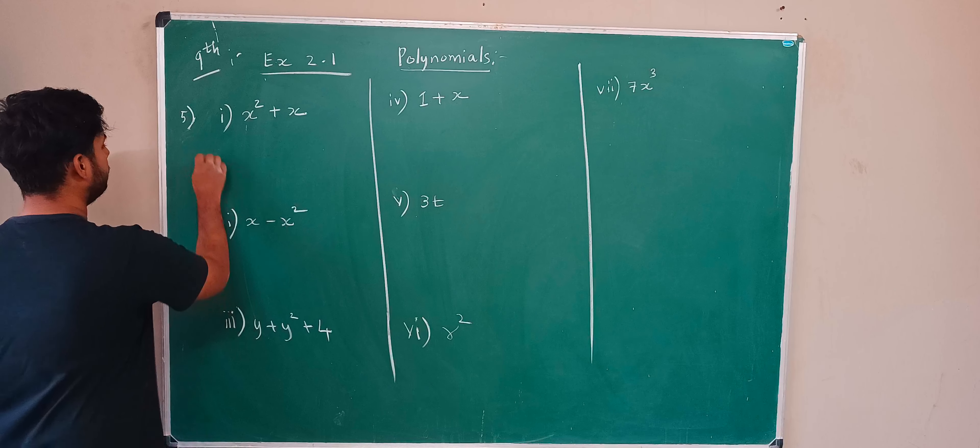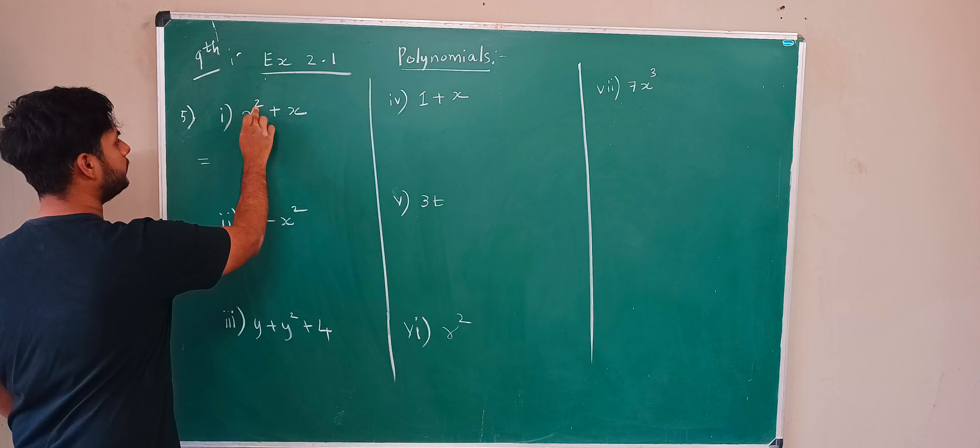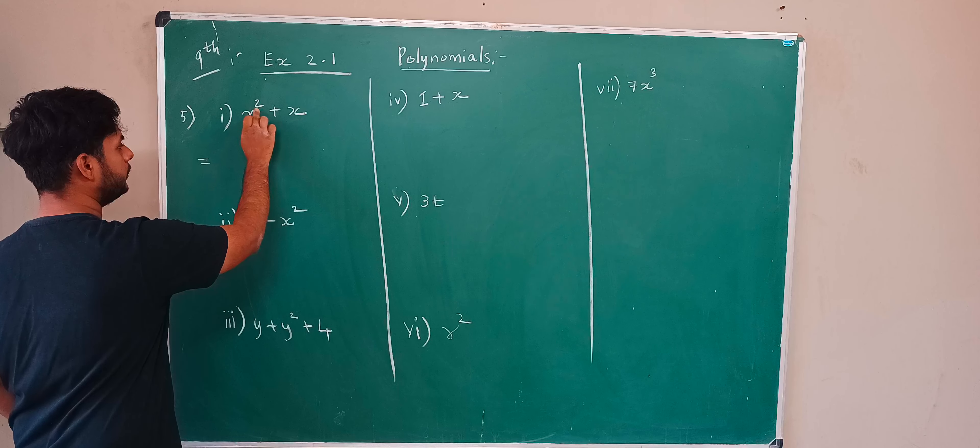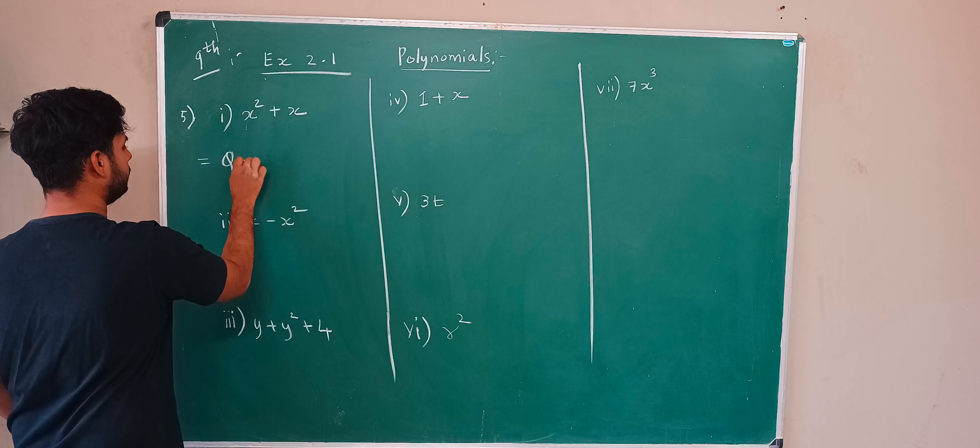So here now, x square plus x. What is the highest here? Two. So this is quadratic equation, easy.